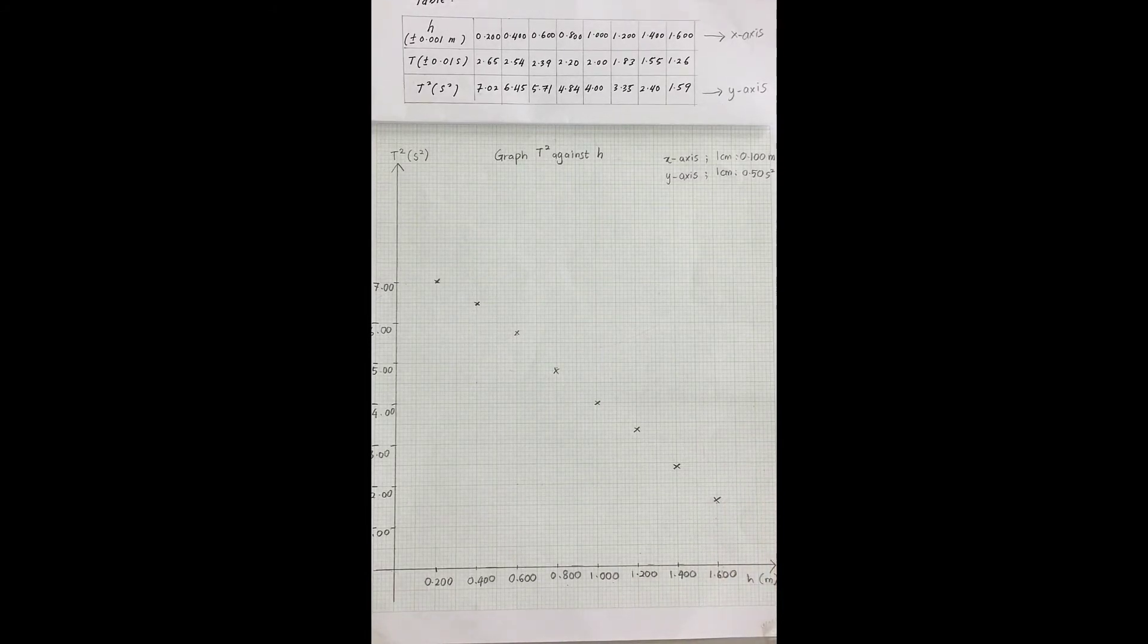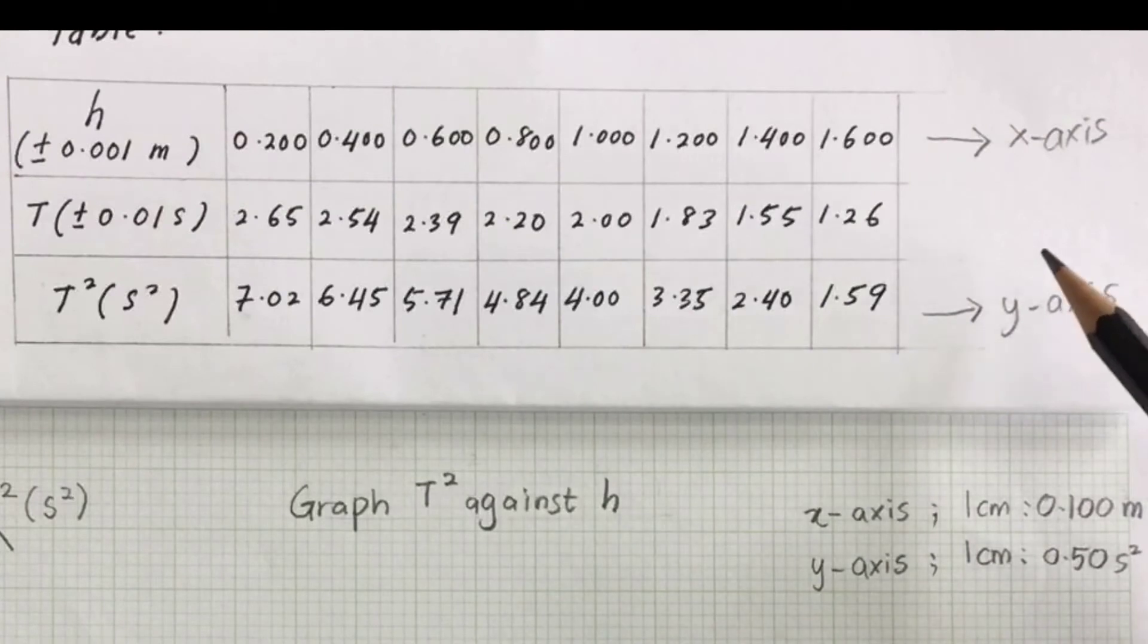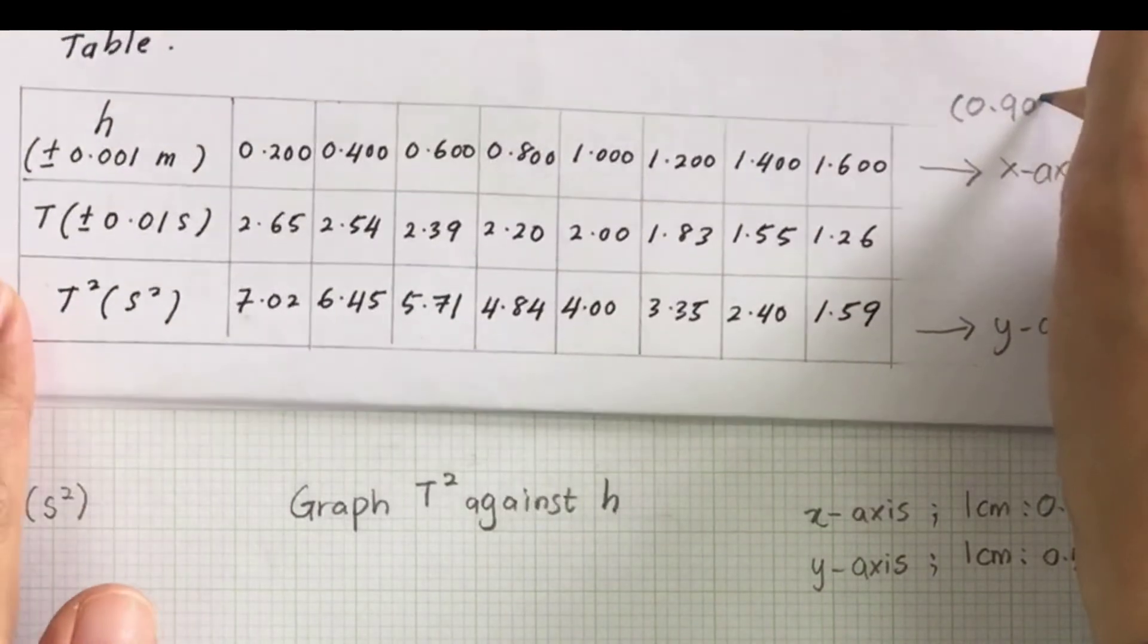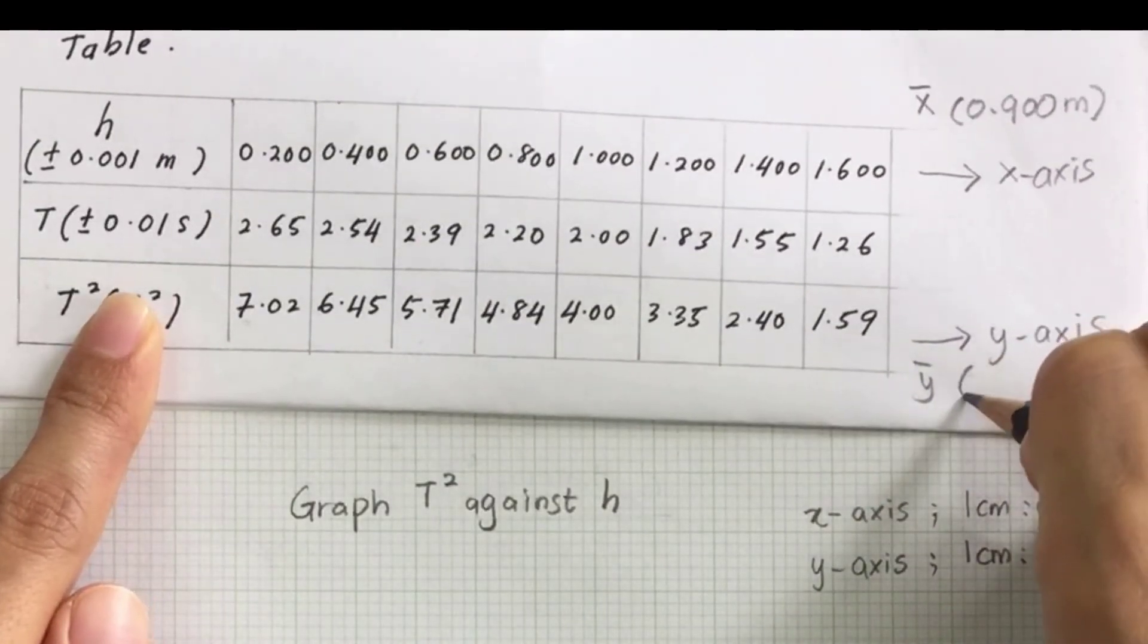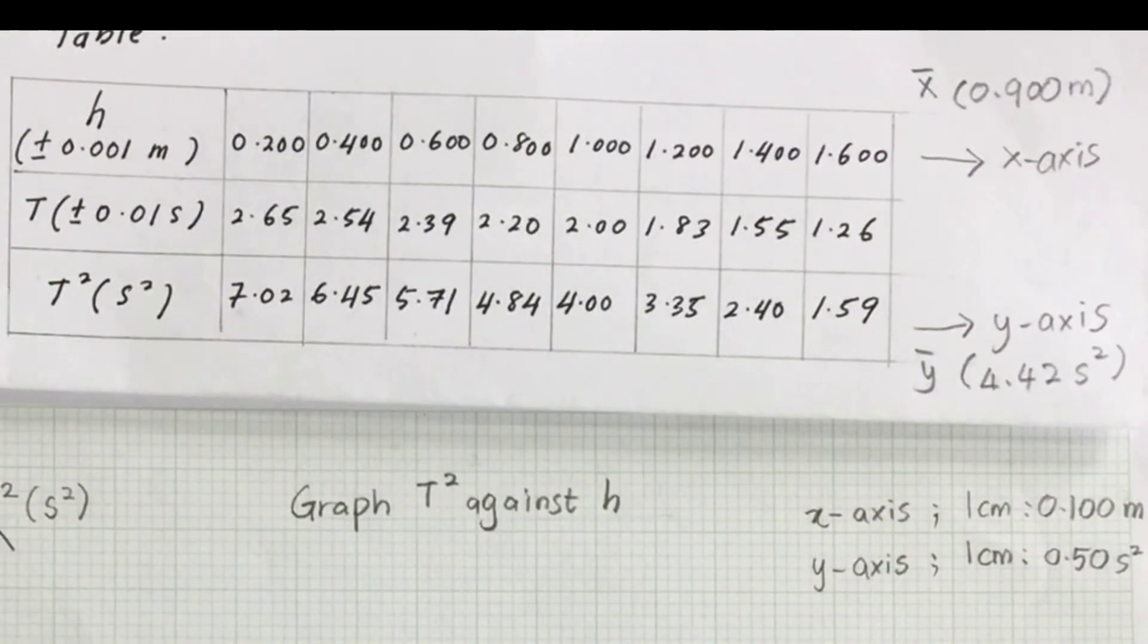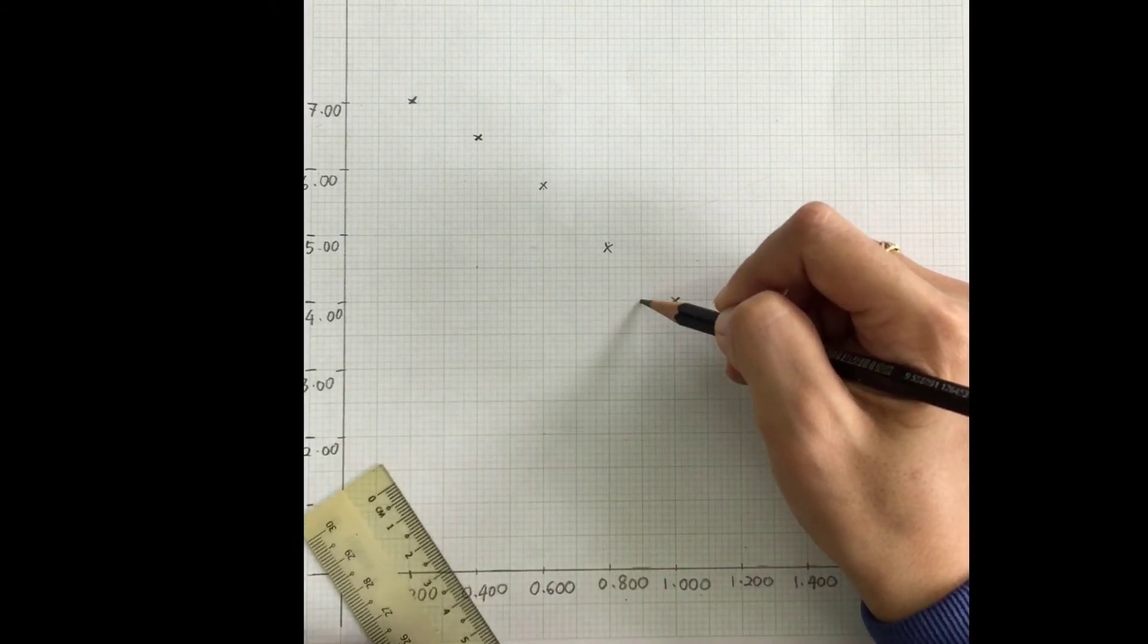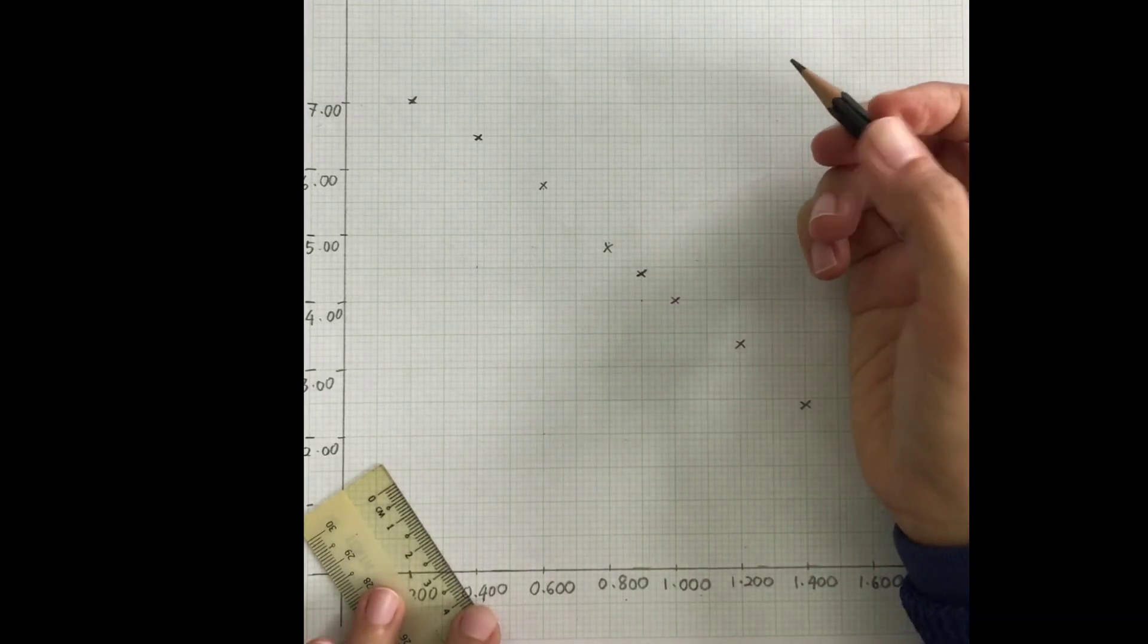After that, you are going to plot the centroid. You calculate the centroid by taking the average of the x-axis and the y-axis. In this example, the centroid is 0.900 for the x-axis, so this is your x-bar, and for the y-axis the average is 4.42 second squared. Plot the centroid point, it should be nearly here. Mark your centroid with the circle around it.